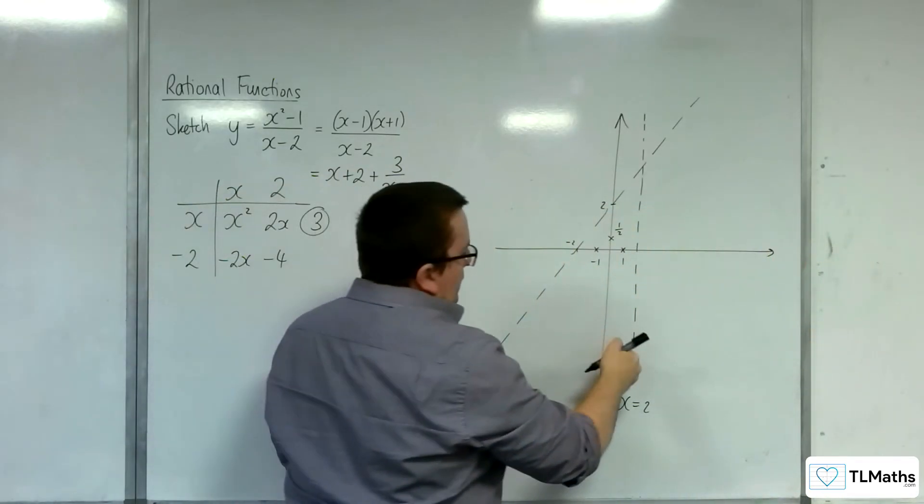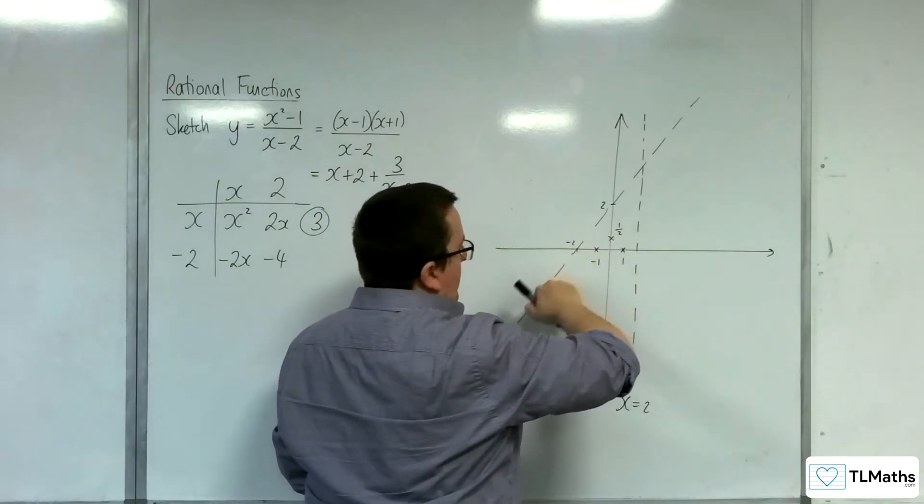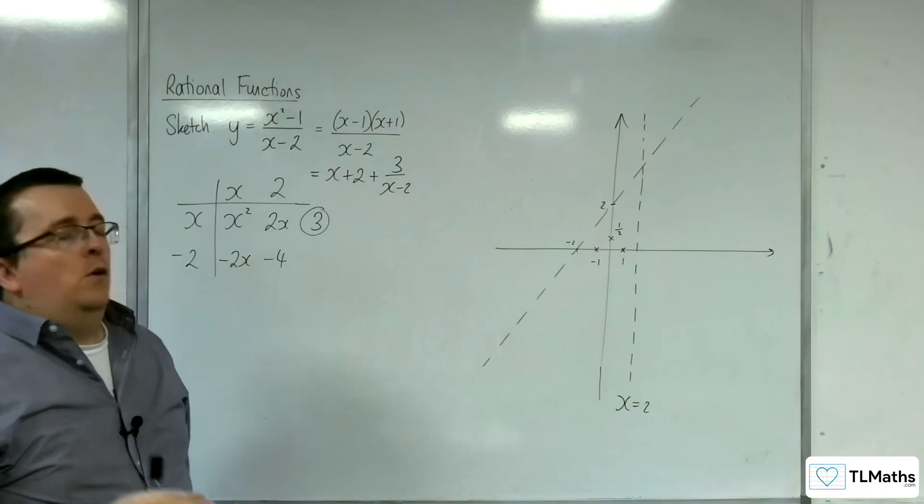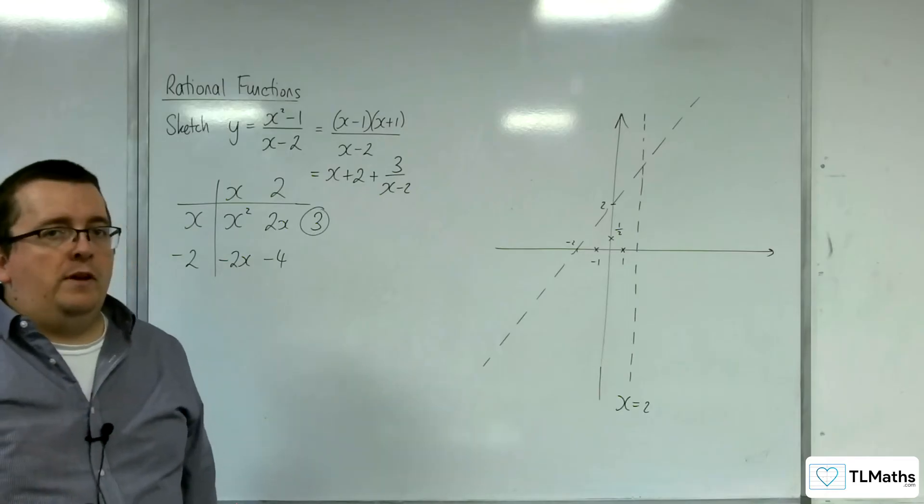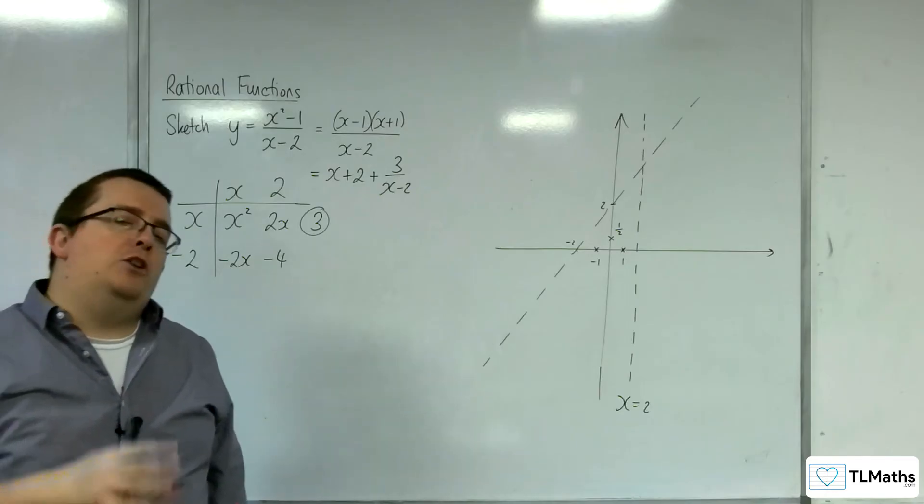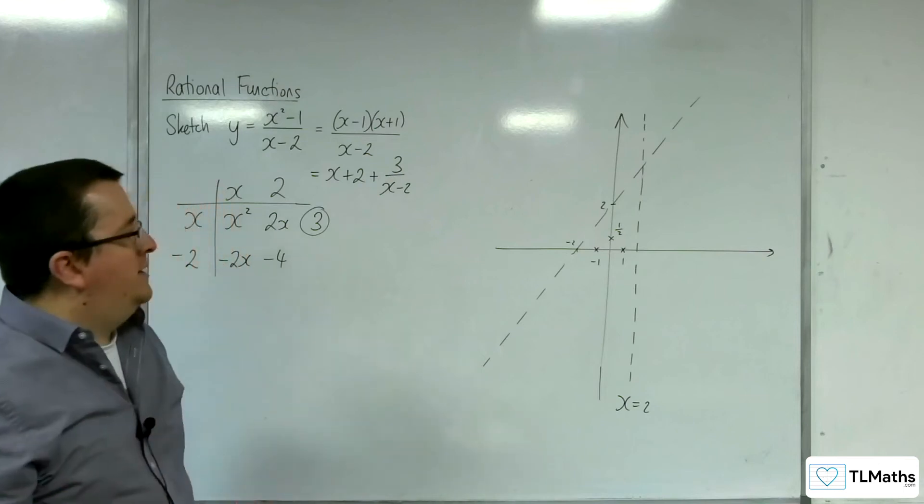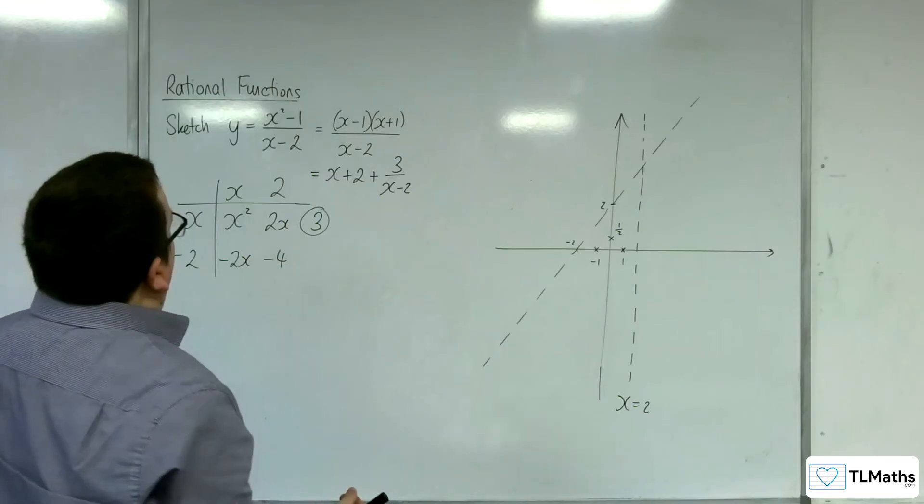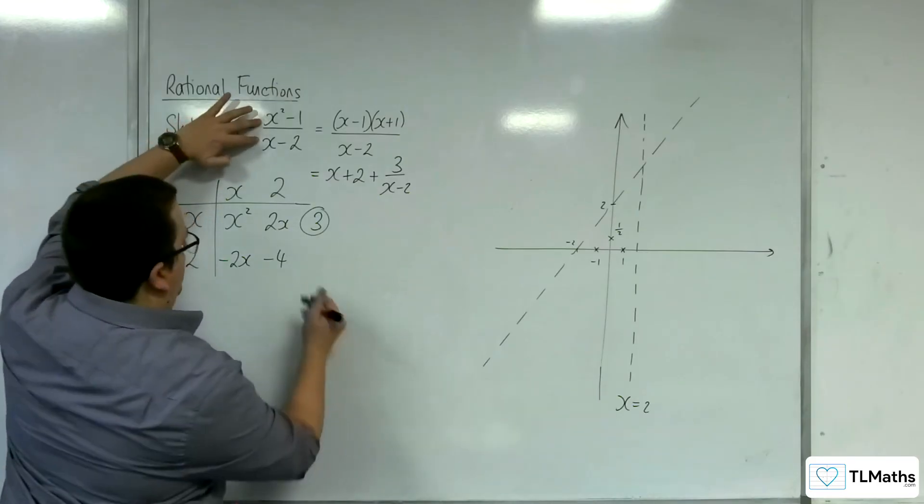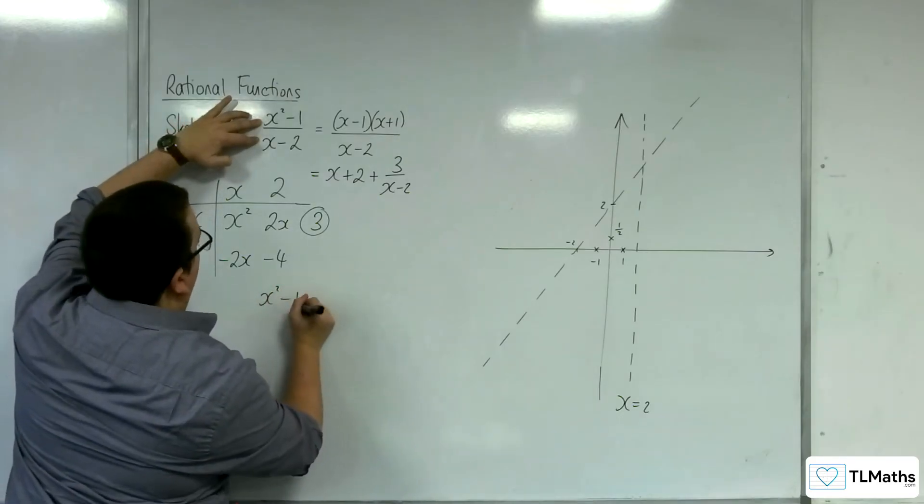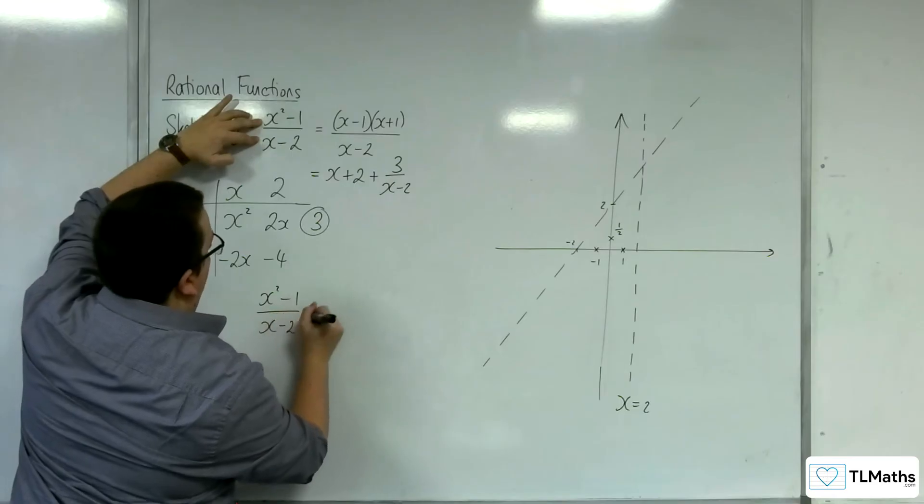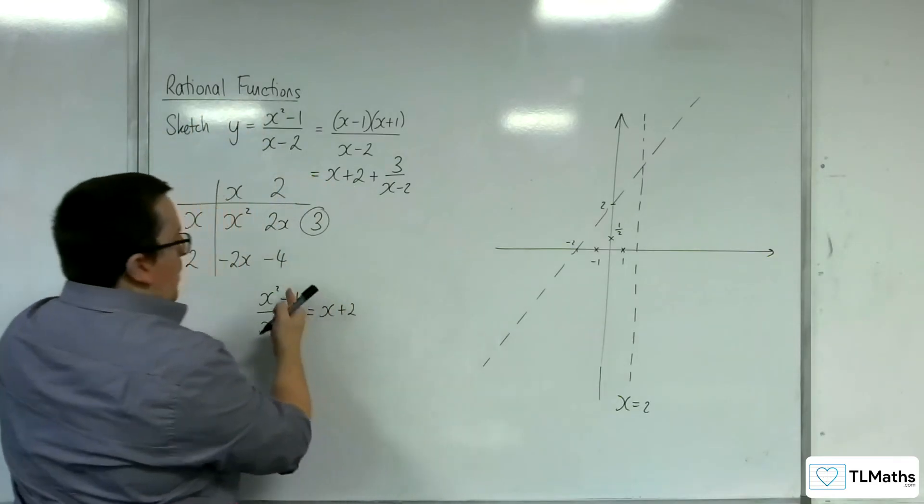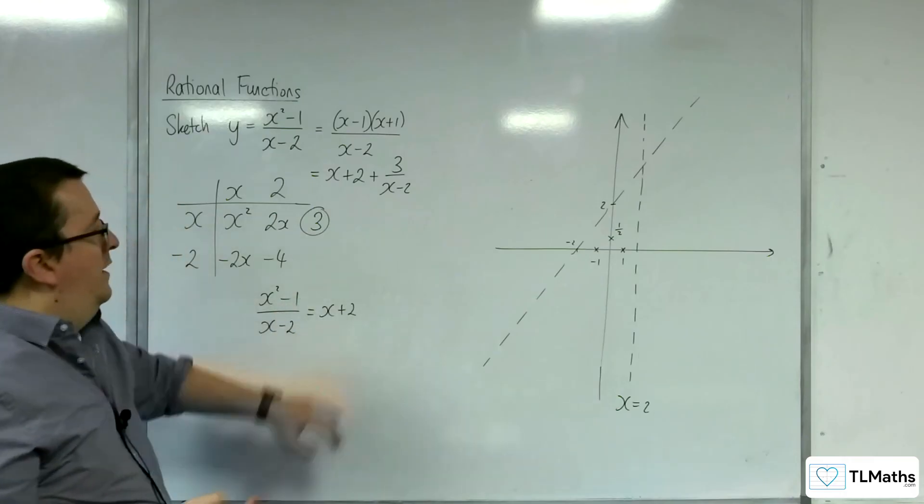So you can clearly see that the curve must be doing this. Now, we should also check whether the curve crosses that oblique asymptote or not, much in the same way as we checked whether a curve crossed the horizontal asymptote. So that must mean that we need to put the x squared take away 1 over x take away 2 equal to the y equals x plus 2, because it would be where these two, the curve and that line, intersect.